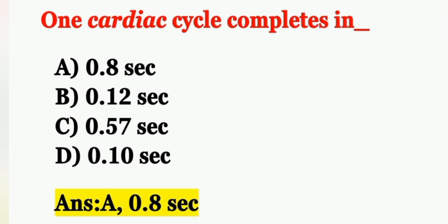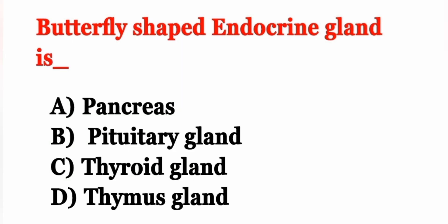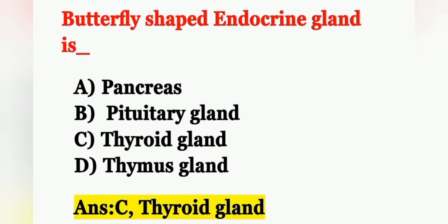Next question: Butterfly-shaped endocrine gland is — Option A: pancreas, Option B: pituitary gland, Option C: thyroid gland, Option D: thymus gland. The butterfly-shaped endocrine gland is the thyroid gland. Option C is the correct answer.